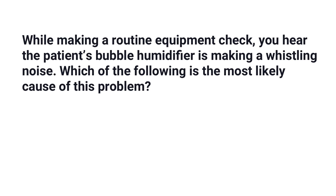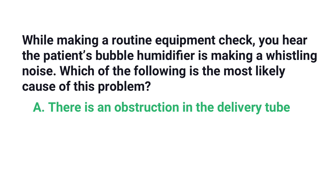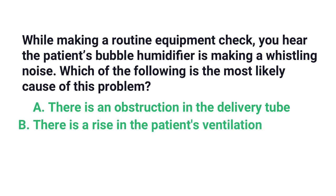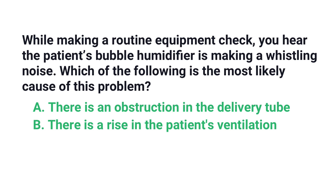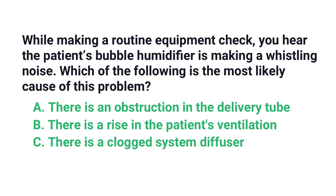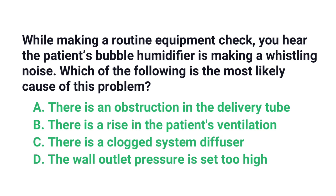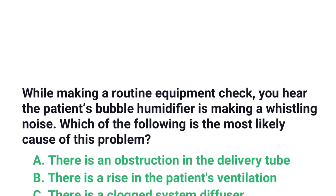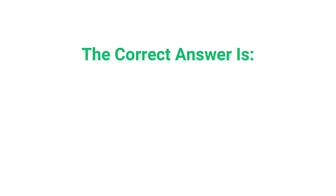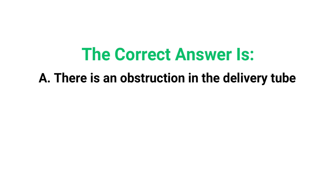While making a routine equipment check, you hear that a patient's bubble humidifier is making a whistling noise. Which of the following is the most likely cause? A) There is an obstruction in the delivery tube, B) there is a rise in the patient's ventilation, C) there is a clogged system diffuser, or D) the wall outlet pressure is set too high.